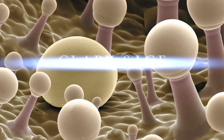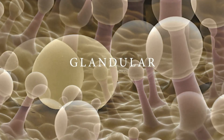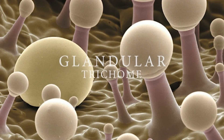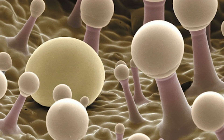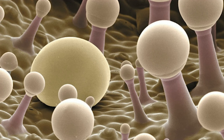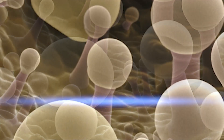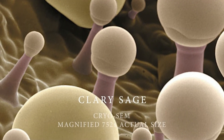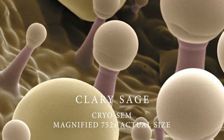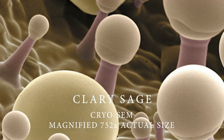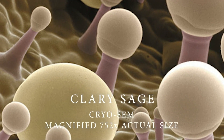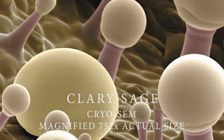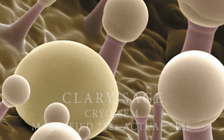Let's look at clary sage, which features a glandular trichome with a short hair and an oil duct on top. This particular photo has been magnified 752 times its actual size.